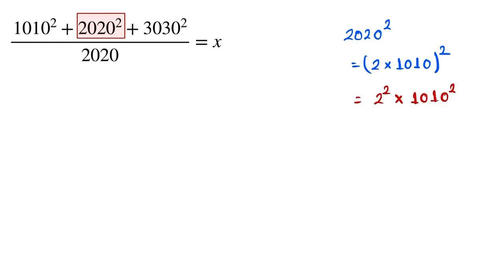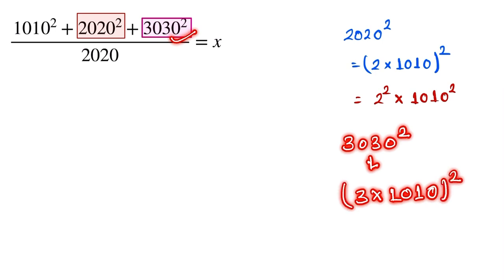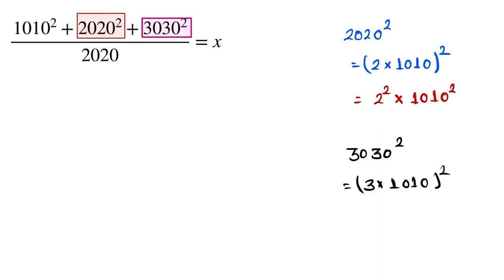Now we focus this part 3030 the power 2. 3030 can be written as 3 into 1010, the whole power 2. Now it can be written as 3 the square, 3 the power square, and 1010 the power 2.